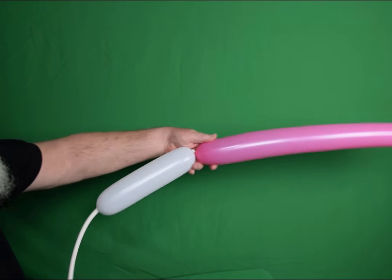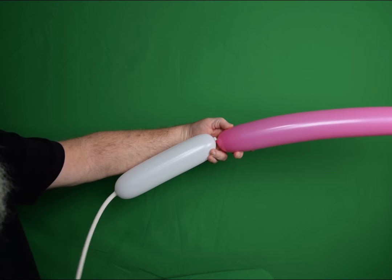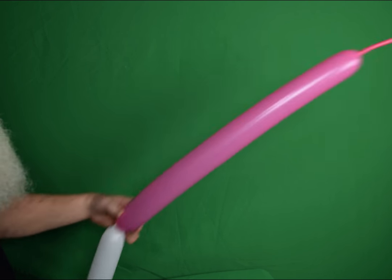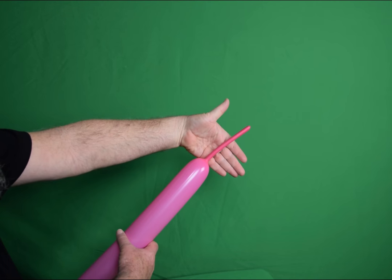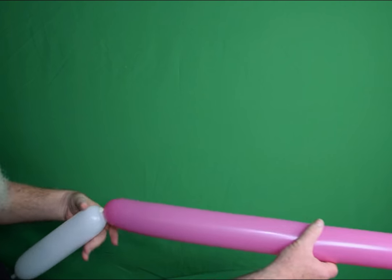Now we're going to start with two 360s. I've got a fuchsia and I've got a white. I've got them tied together. The fuchsia has got about a hand and a half left uninflated on the end.